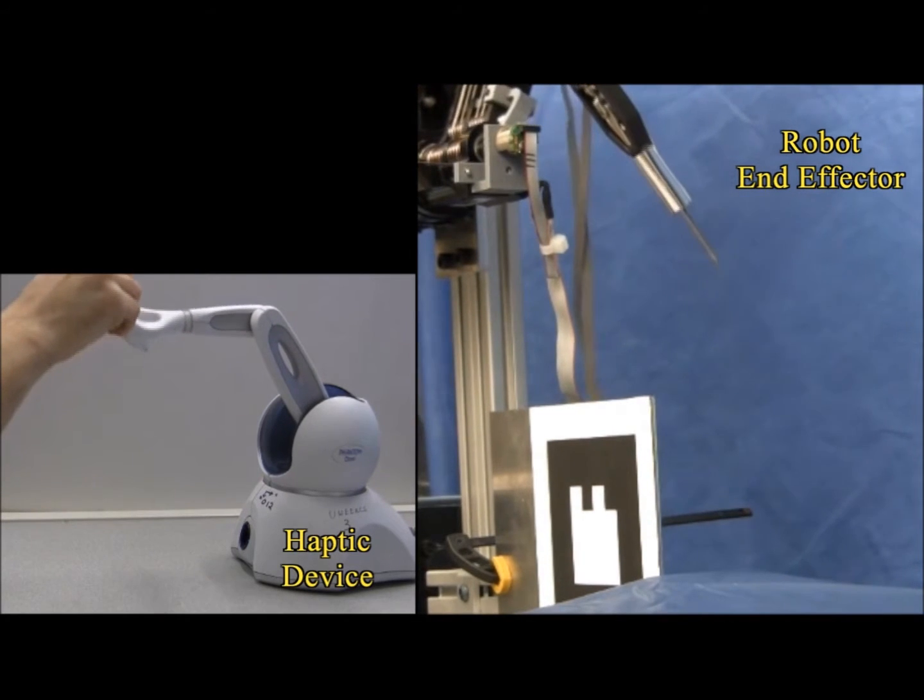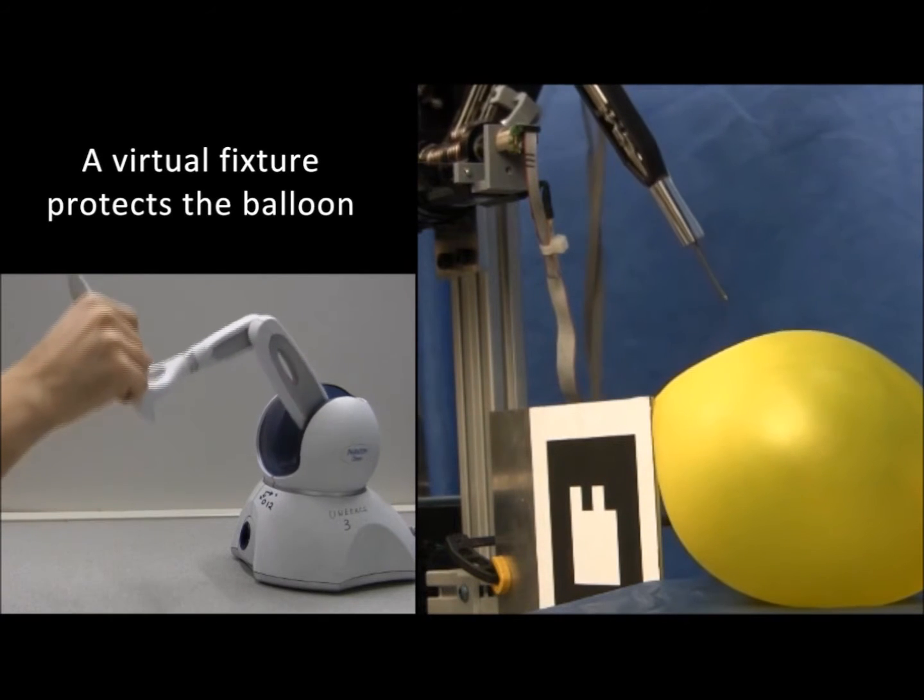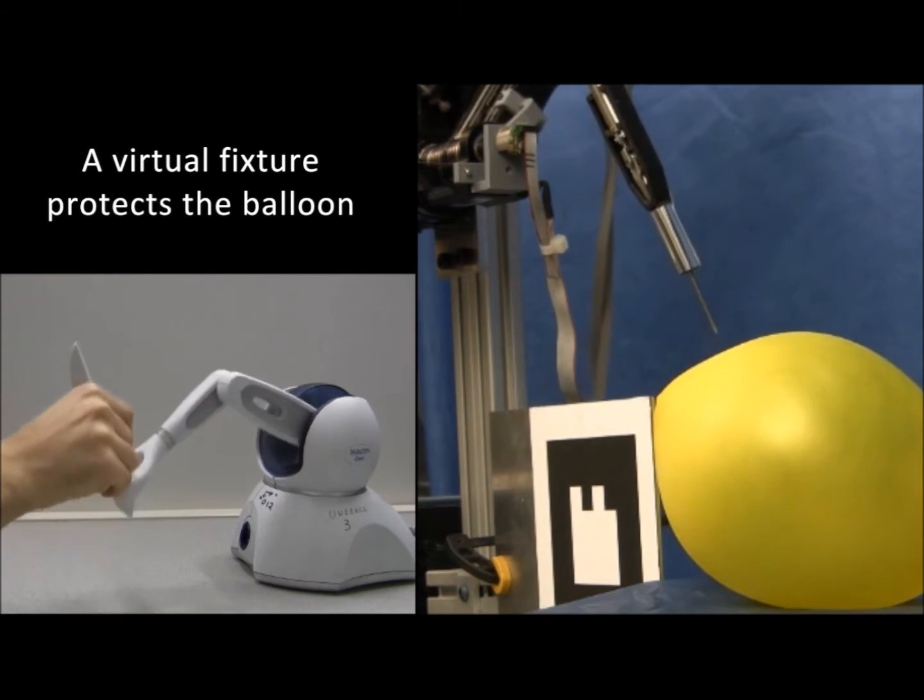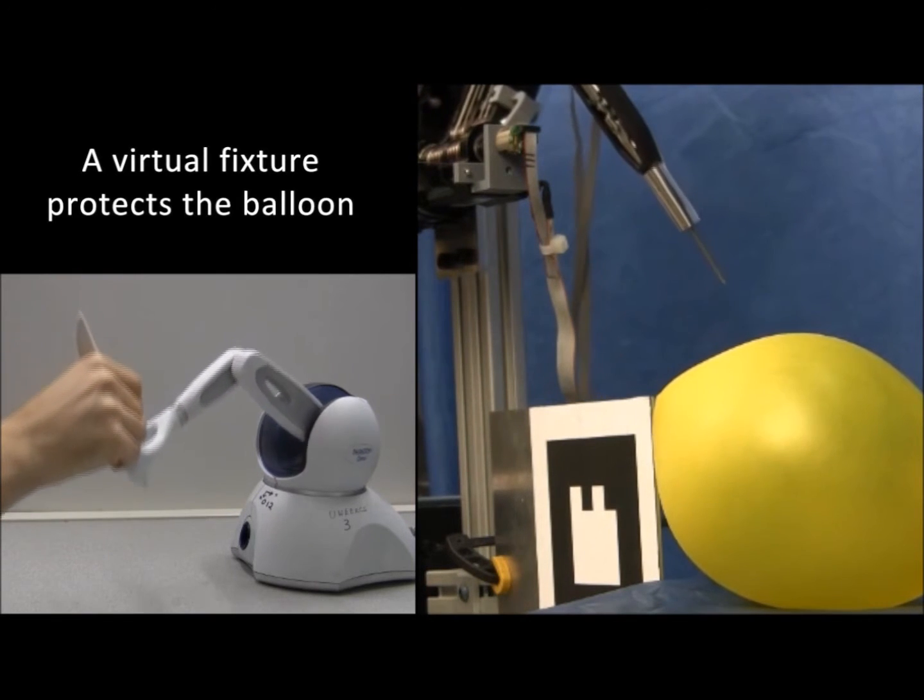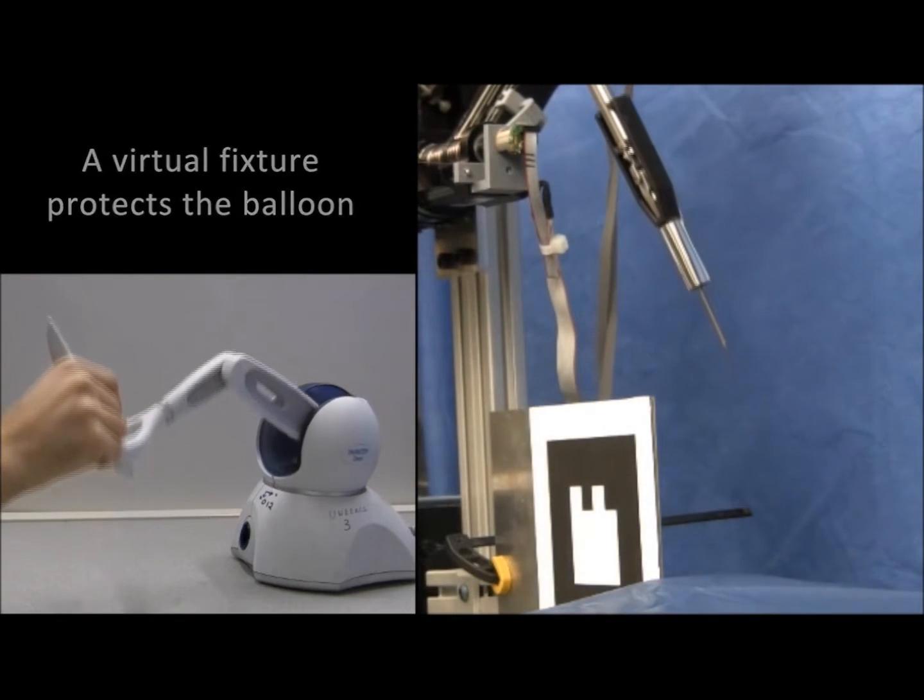We can prevent an object from being touched by placing a virtual fixture around it. This virtual fixture is felt by the operator as an opposing force on the haptic device. It also can prevent the robot from touching the balloon.